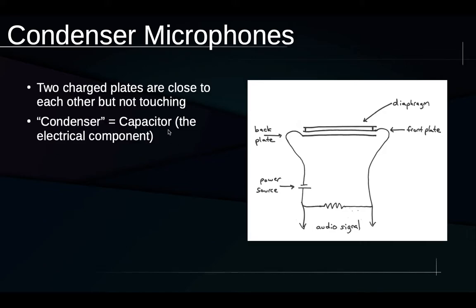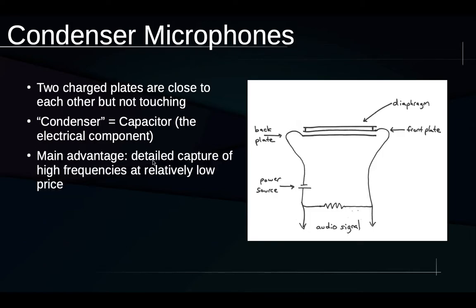And the word for this type of microphone, condenser microphone, basically comes from the fact that the word condenser is an older, or perhaps also a British word for capacitor, the electrical component. And a capacitor is this kind of electrical component where we have two charged areas fairly close to each other but not touching. So the main advantage of this kind of microphone is that it provides fairly detailed capture of high frequencies at a relatively low price. We can make dynamic microphones that also provide detailed capture of high frequencies, but it tends to cost a lot more to do that.